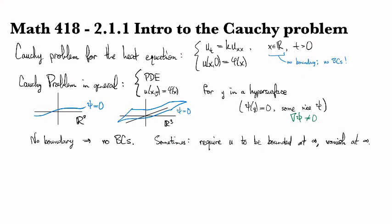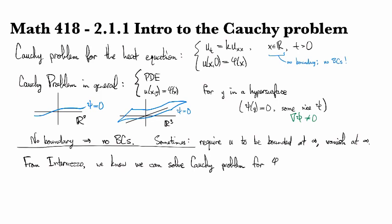So that's just in general for the Cauchy problem. So let's return to what we're looking at right now. So we're going to solve the Cauchy problem for the heat equation on the positive half plane. And from the intermezzo that I posted on Canvas, we know that we can solve the Cauchy problem for some initial conditions phi, once we have the fundamental solution.